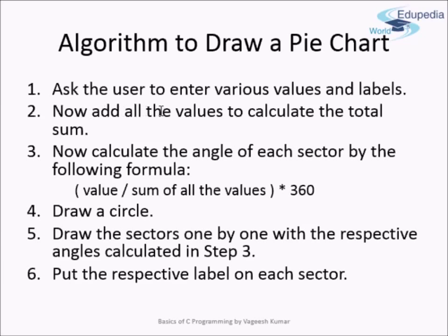Next, you add all those values. Suppose you are creating a pie chart representing the ratio of boys to girls in a class. You ask the user to input the number of boys, then girls, plus a label for each — for example 'count of boys' and 'count of girls'. Then you add up all the values to find the total number of students, from which you determine what angle each sector of the circle should have.